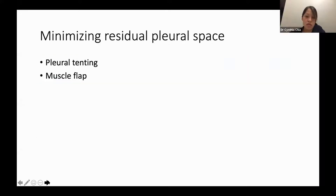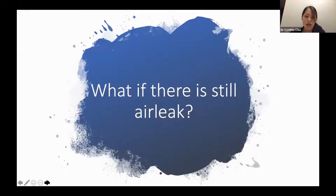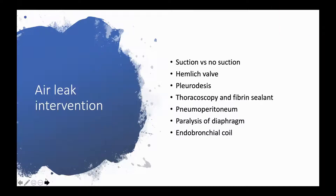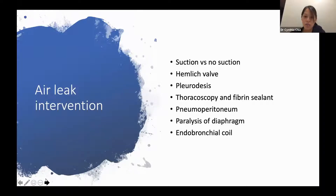Minimizing residual pleural space can be achieved by pleural tenting or muscle flap. But what if, after doing everything possible during surgery, there is still an air leak? This also applies to COPD patients with secondary pneumothorax who have a chest tube with ongoing leak and may not be surgical candidates. Non-surgical options include suction versus no suction, Heimlich valve, pleurodesis — bedside or surgical — thoracoscopy, and fibrin sealant.